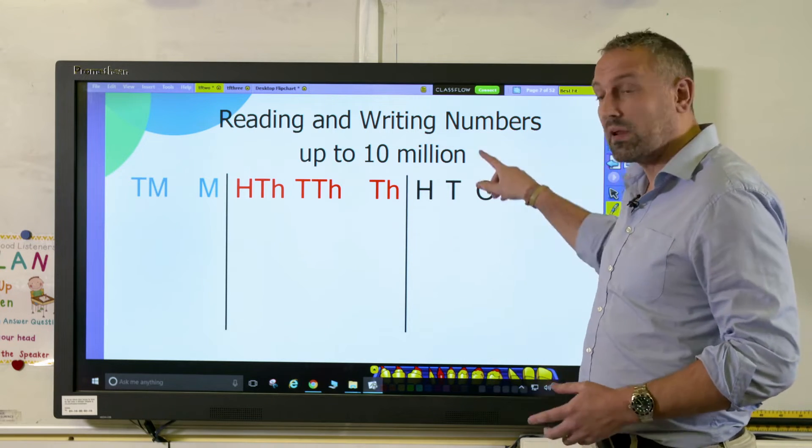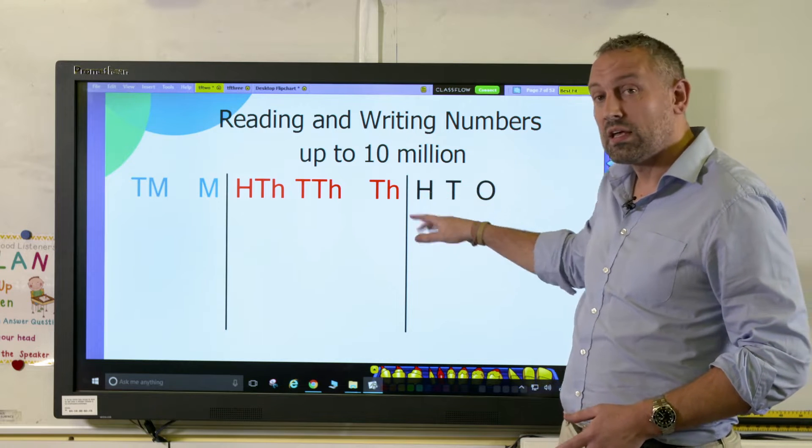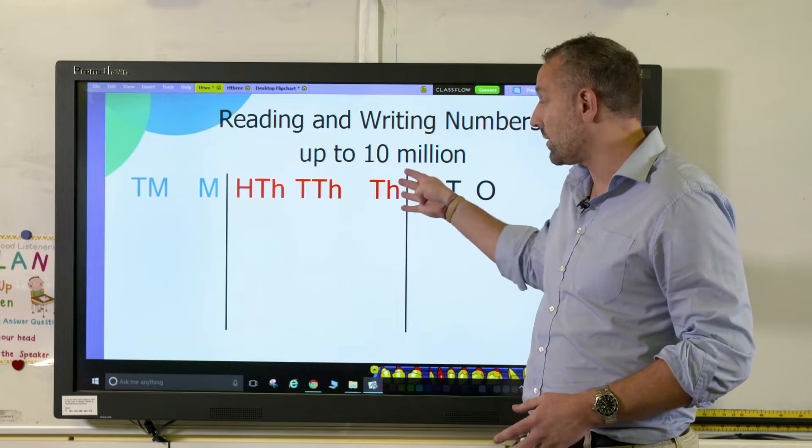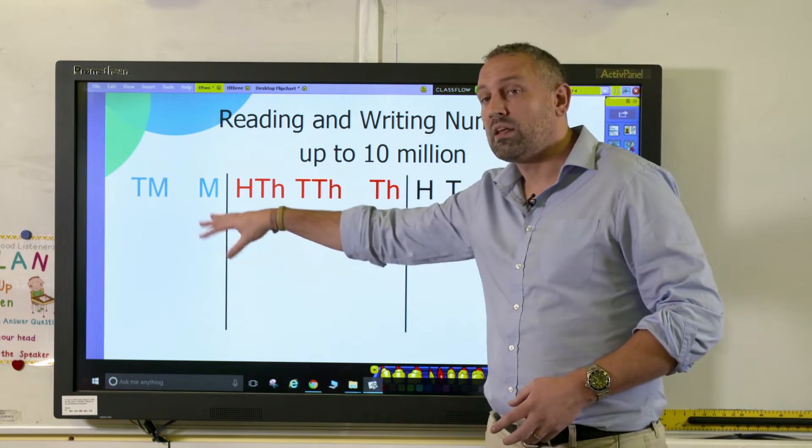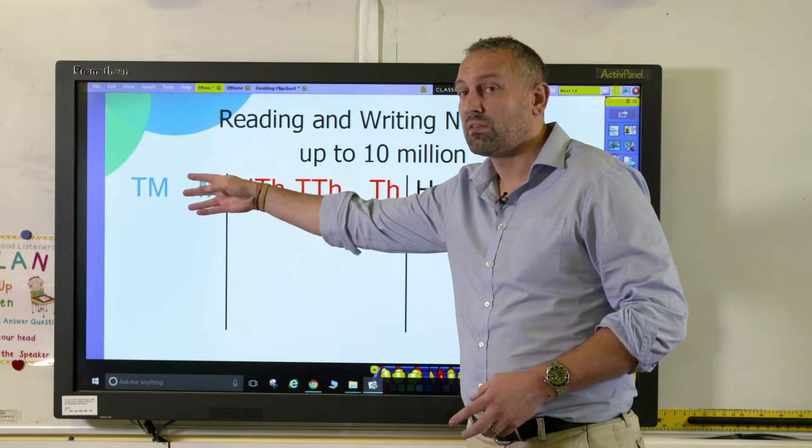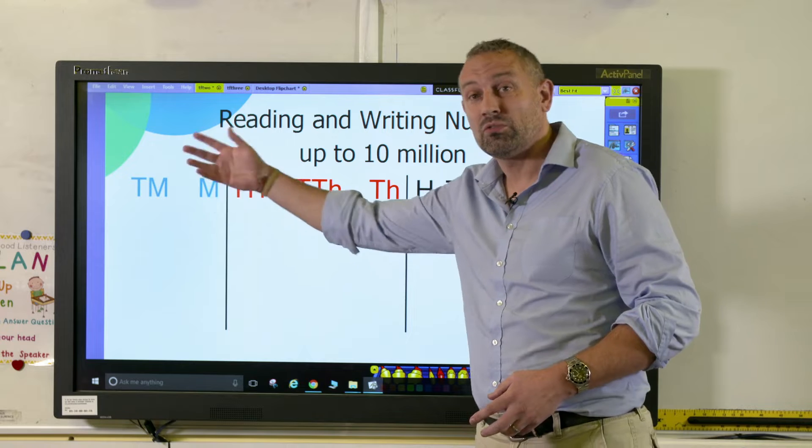So in the ones family we have the ones, the tens, and the hundreds. In the thousands family we have thousands, tens of thousands, and hundreds of thousands. And in the millions we have the millions and the tens of millions. The next one would of course be the hundreds of millions.